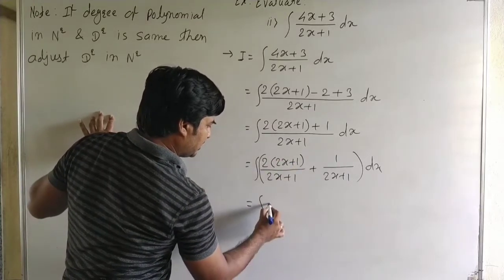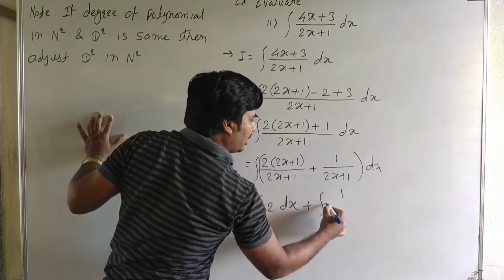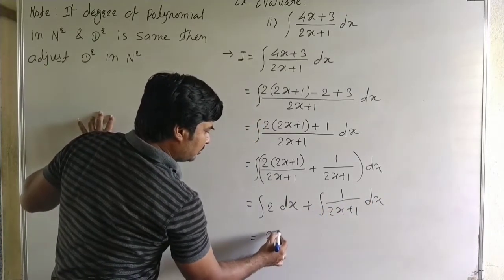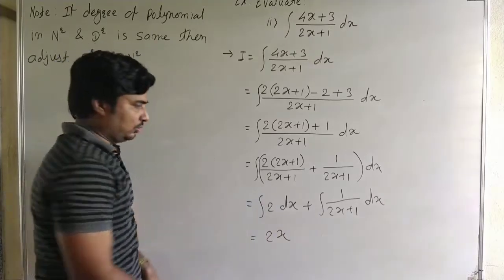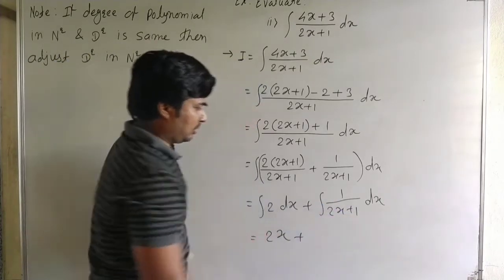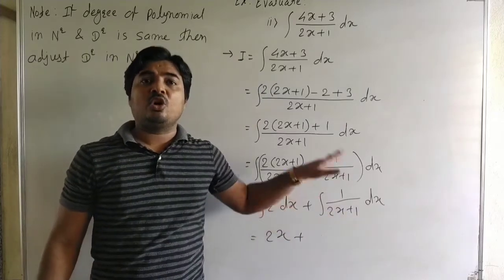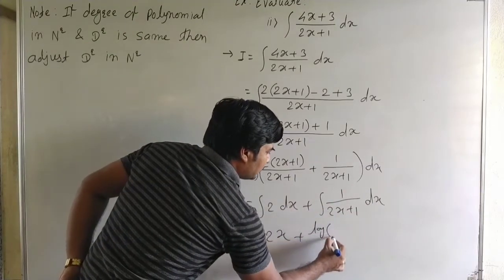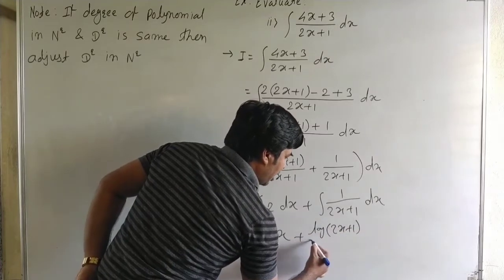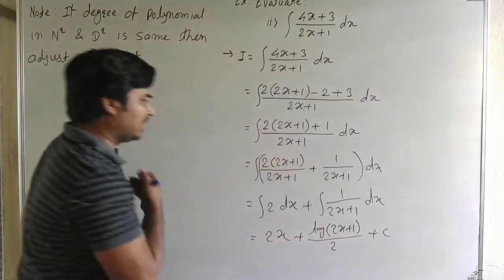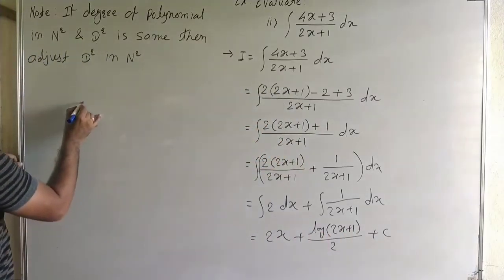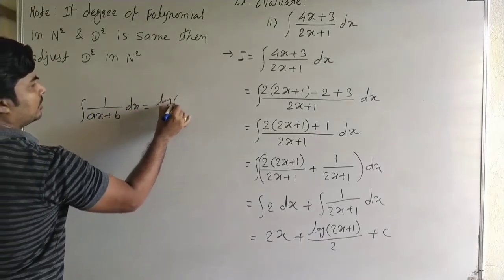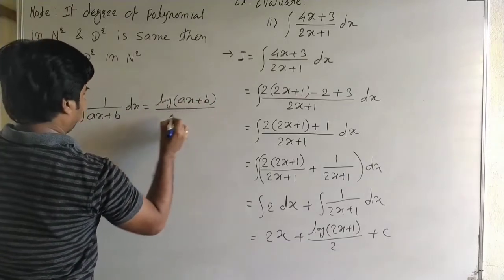Separate: 2 into (2x plus 1) upon (2x plus 1) dx plus 1 upon (2x plus 1) dx. The 2x plus 1 cancels, giving integral of 2 dx plus integral of 1 upon (2x plus 1) dx. This equals 2x plus log of (2x plus 1) upon 2 plus C. We use the formula: integral of 1 upon (ax plus b) dx equals log|ax plus b| divided by a.